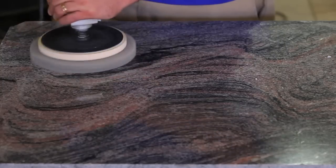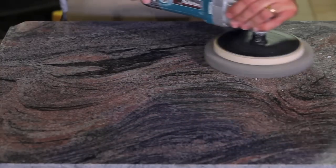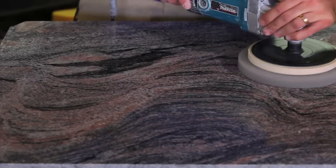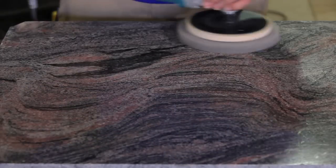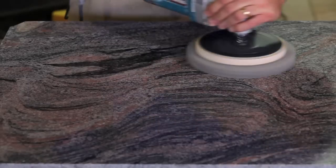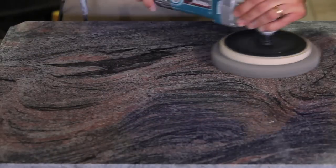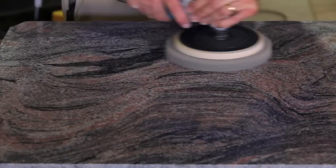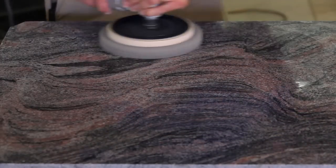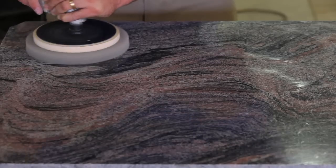While many people prefer to increase the speed of the machine as the procedure continues some prefer to leave the setting on number one. Number one is 600 RPM and will work just fine for most or all stones using this product. This will reduce the distance of splatter and help keep your work and surrounding areas clean.